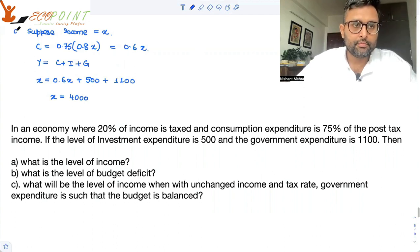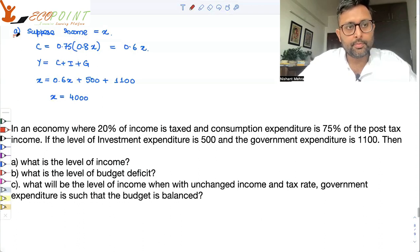X will come out to be 4000. One thing done. Second thing. X will come out to be 4000 means income will come out to be 4000. What is the level of budget deficit?